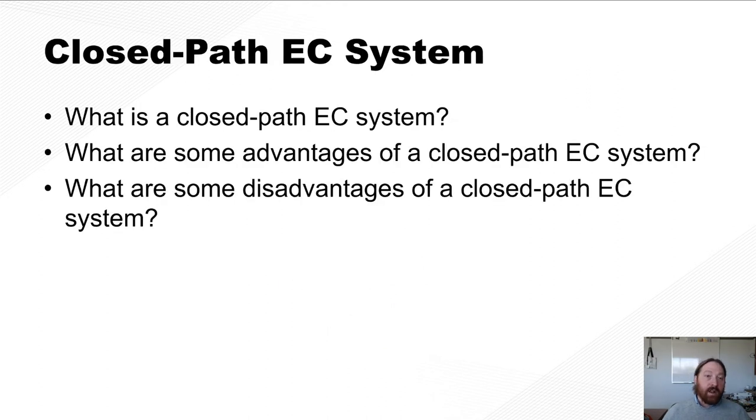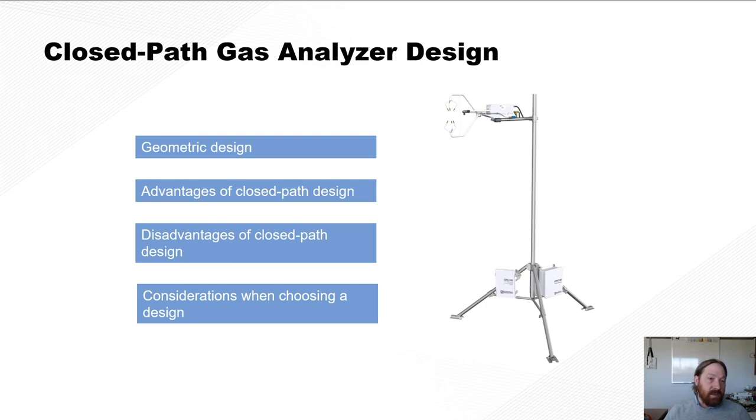Okay. So with a closed path eddy covariance system, we look at the same things. What are some advantages and disadvantages of that closed path, and what by definition makes a closed path? So we're going to look at, again, geometric design, the advantages and disadvantages, and considerations when choosing.